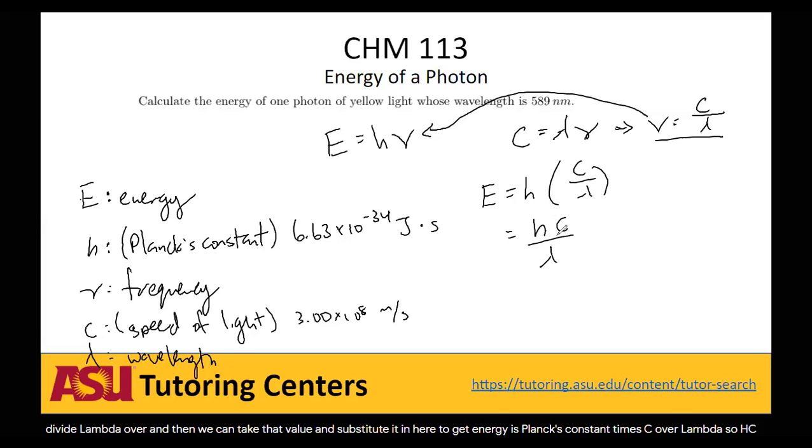And we know what h is. That's Planck's constant. c is the speed of light. It's also a constant. Lambda was given to us as 589 nanometers, which we would have to convert into meters.